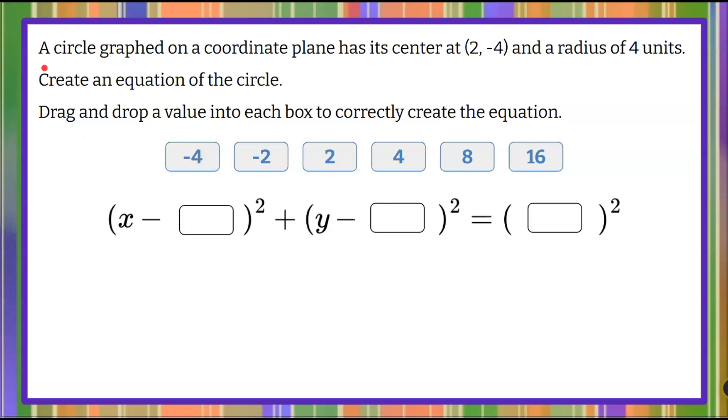Here is a practice problem for you. A circle graphed on a coordinate plane has its center at 2, negative 4, and a radius of 4 units. Create an equation of the circle, and here we're going to drag and drop a value into each box to correctly create the equation. You're given 6 numerical values to pick from and place them to write the equation of the circle.